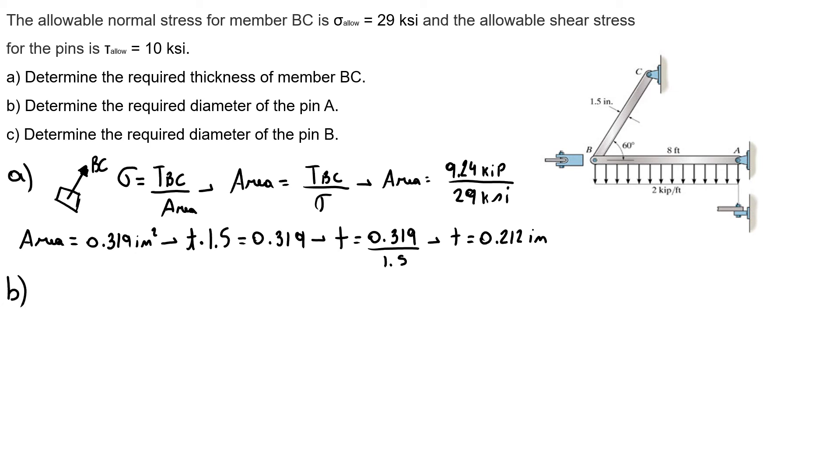For B, we can recall from the previous exercise that first I have a single shear stress because of the image here in A. I know my shear stress equals the reaction in A that I call AR over the area. So I know my area is a pin. My area is pi over 4 times diameter squared equals my reaction 9.24 over 10. Solving this equation, I have my diameter equals 1.09 inches.